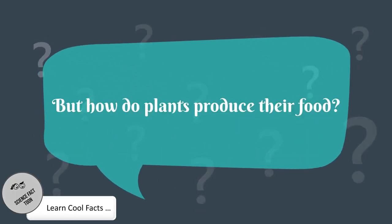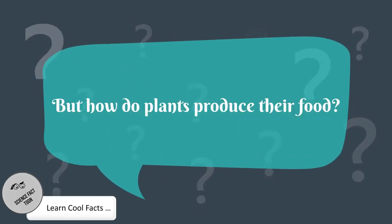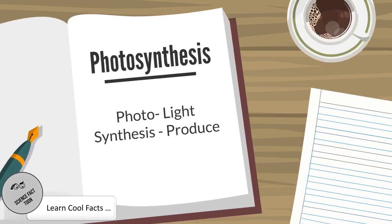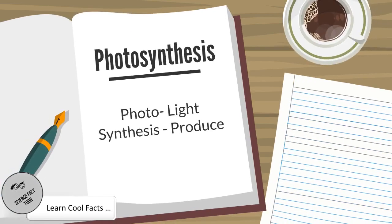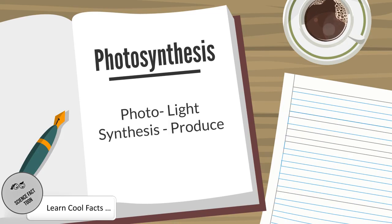But how do plants produce their own food? The answer is photosynthesis. Photo means light, synthesis means produce. Photosynthesis is the process by which plants use sunlight to synthesize foods from carbon dioxide and water.